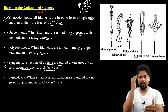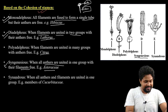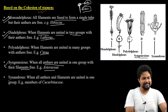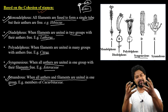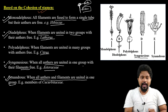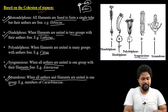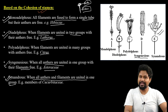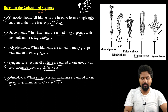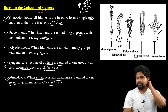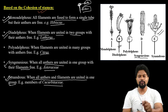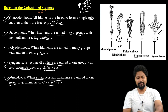Synandrous means when all anthers and filaments are united and fused together — this is called synandrous. The anthers and filaments are all fused. An example is the Cucurbitaceae family.